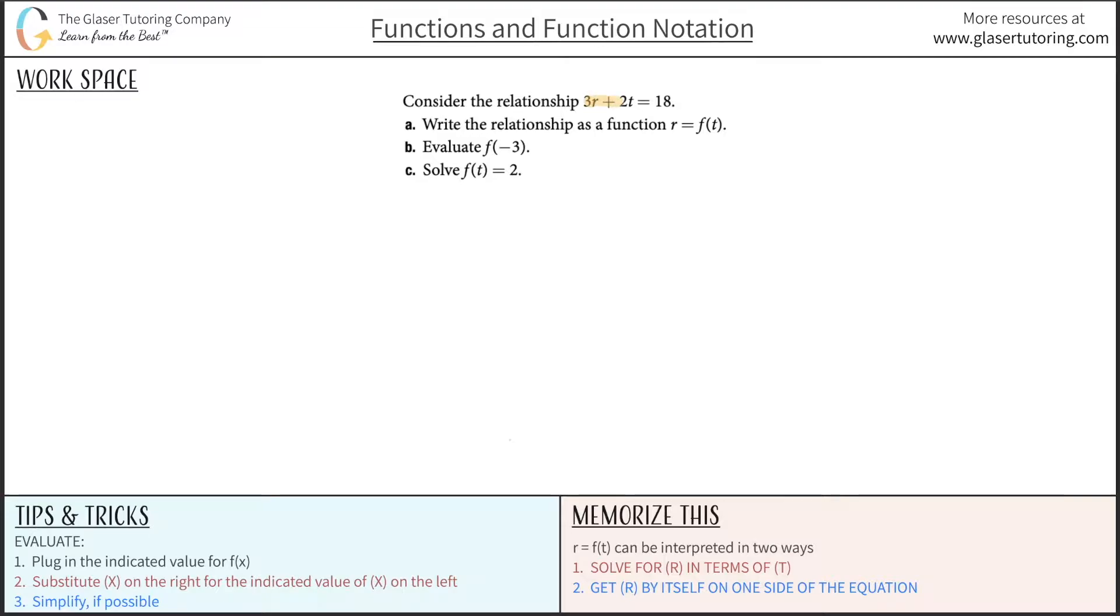Consider the relationship 3r plus 2t equals 18. Write the relationship as a function r equals f(t). Now, when you see this notation here, r is equal to f(t), we can restate this in a few ways. This is basically saying that we want r as a function of t.